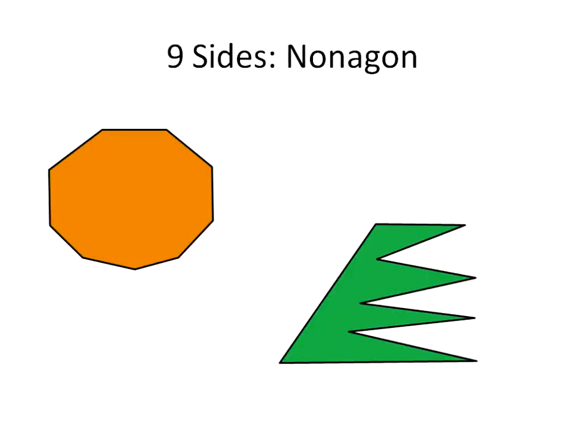And the nonagon. The non is, again, a prefix for nine. Nonagons aren't used very often. In fact, I had to draw both of these. There wasn't really a way to draw a nice easy nonagon except to just kind of throw lines all over the place. Nonagon's not really a popular shape.